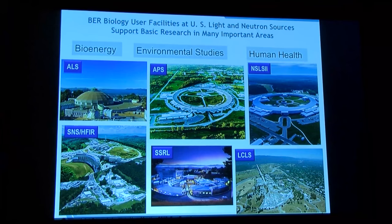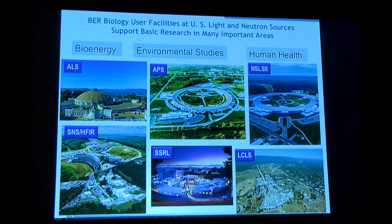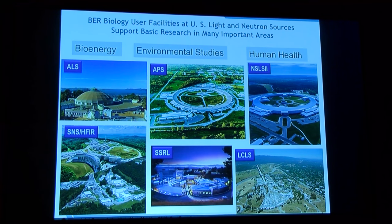Let me introduce our BER-funded facilities in structural biology. These are located in light sources and neutron sources in the United States — a five-billion-dollar investment from the Department of Energy. We have the Advanced Light Source at Berkeley National Laboratory, the Advanced Photon Source at Argonne National Laboratory, and the National Synchrotron Light Source 2 at Brookhaven National Lab.